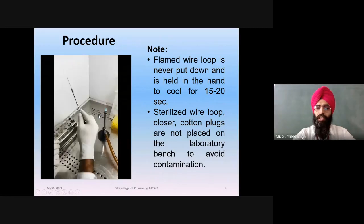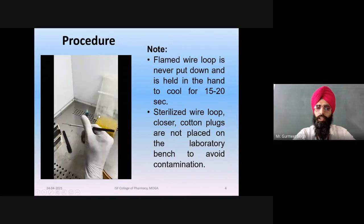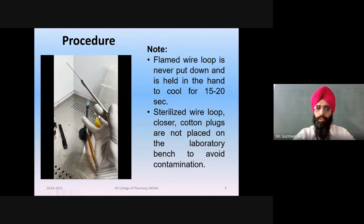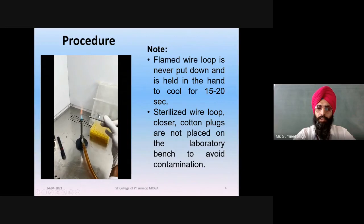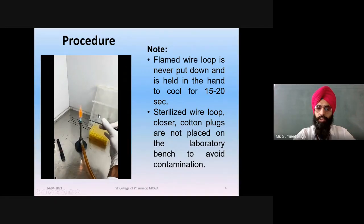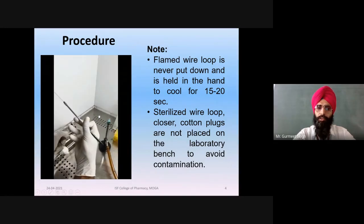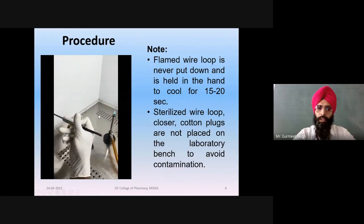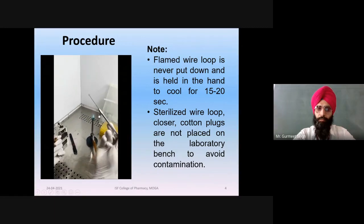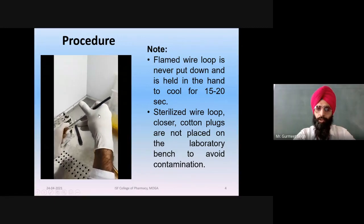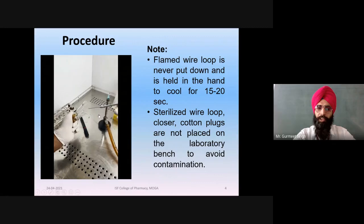Take the inoculating loop in the right hand and sterilize it by holding it in the hottest portion of the flame and heat with the Bunsen burner until the platinum loop is red hot. After that, cool the loop, then open the cotton plug of both tubes and transfer the sample from the bacterial suspension into the nutrient growth media tube.